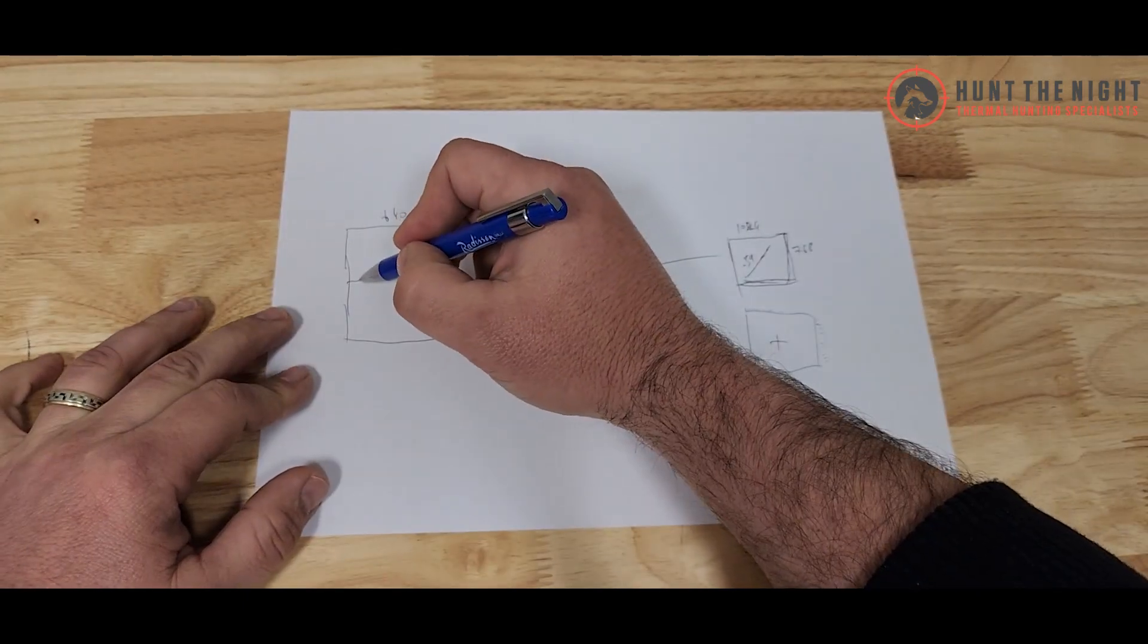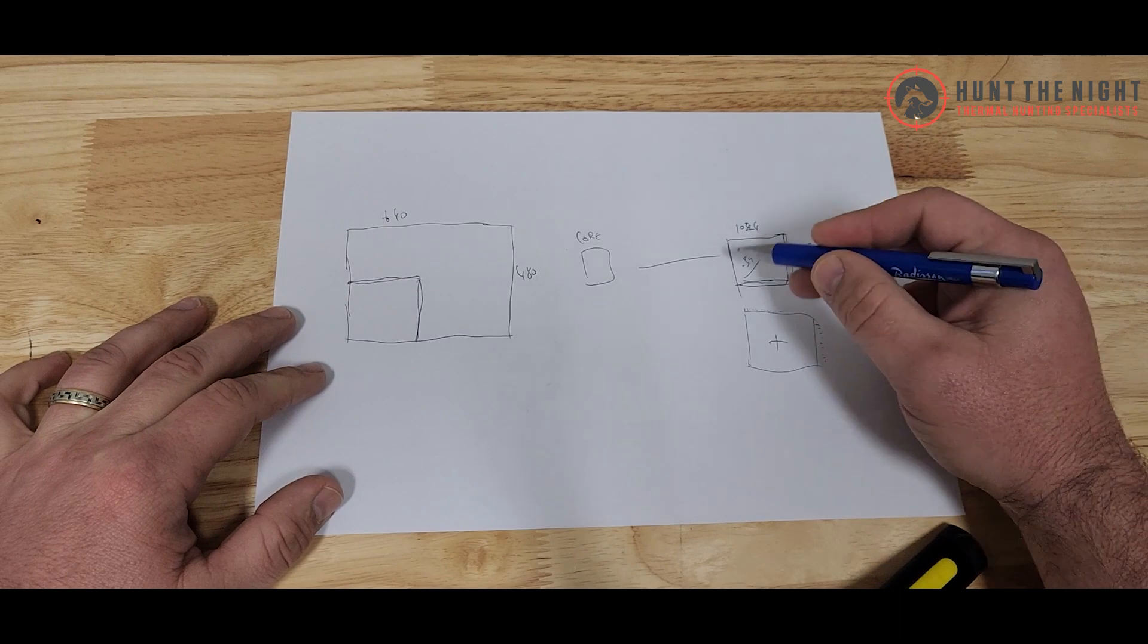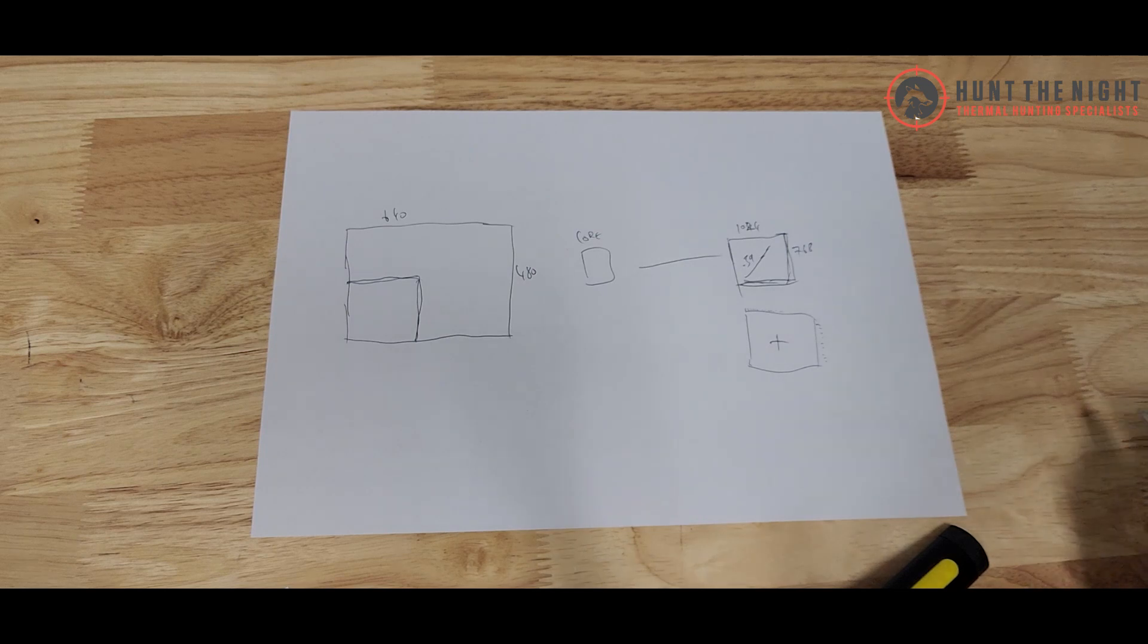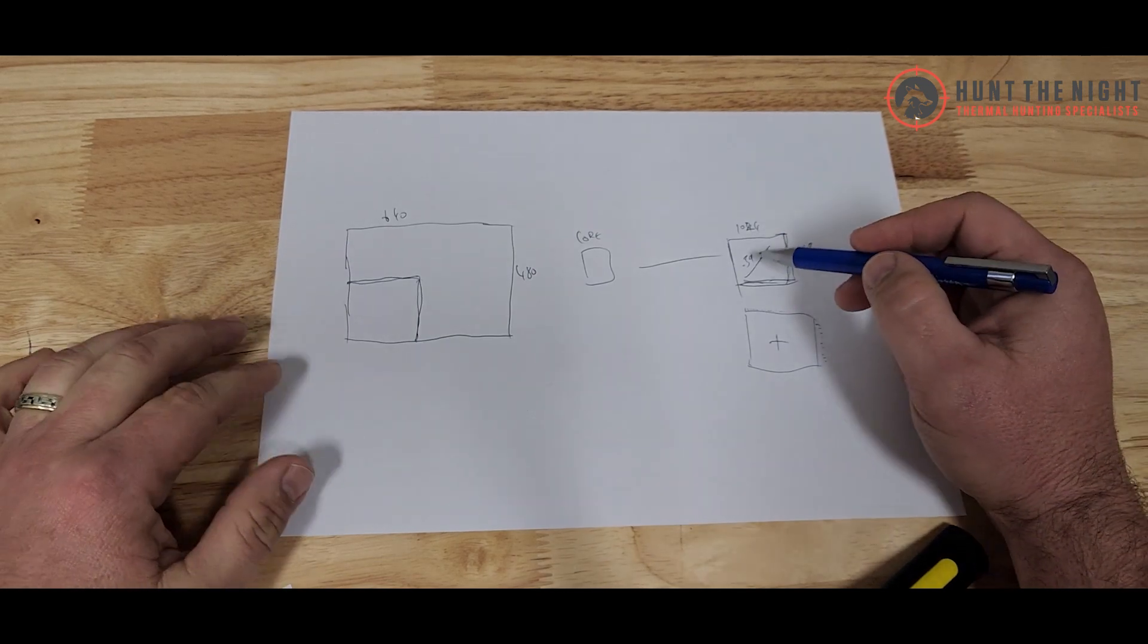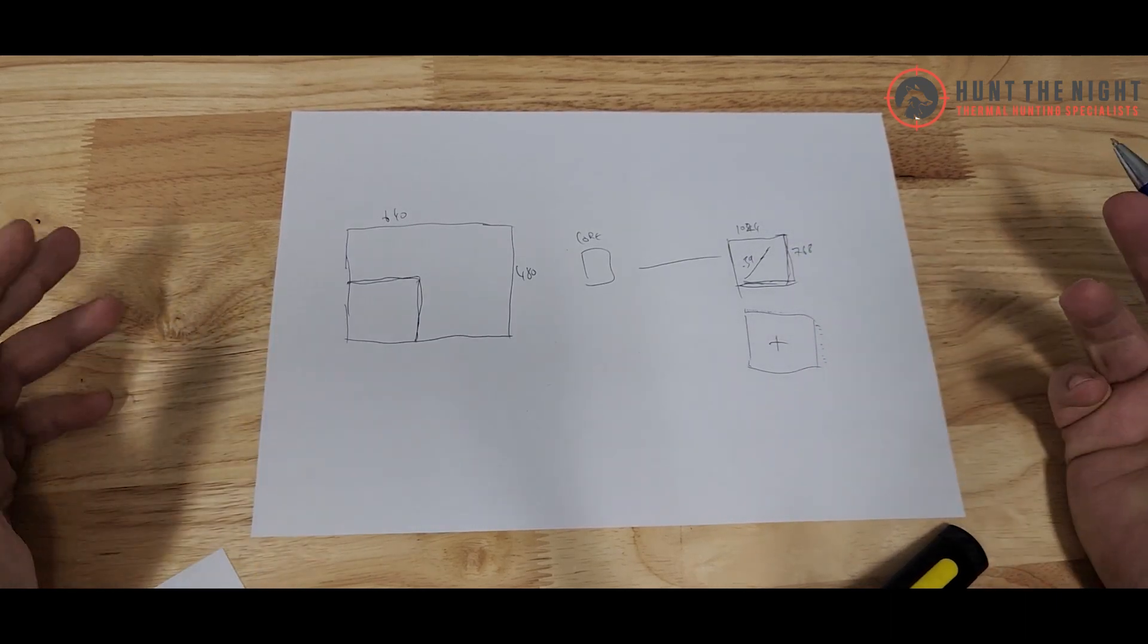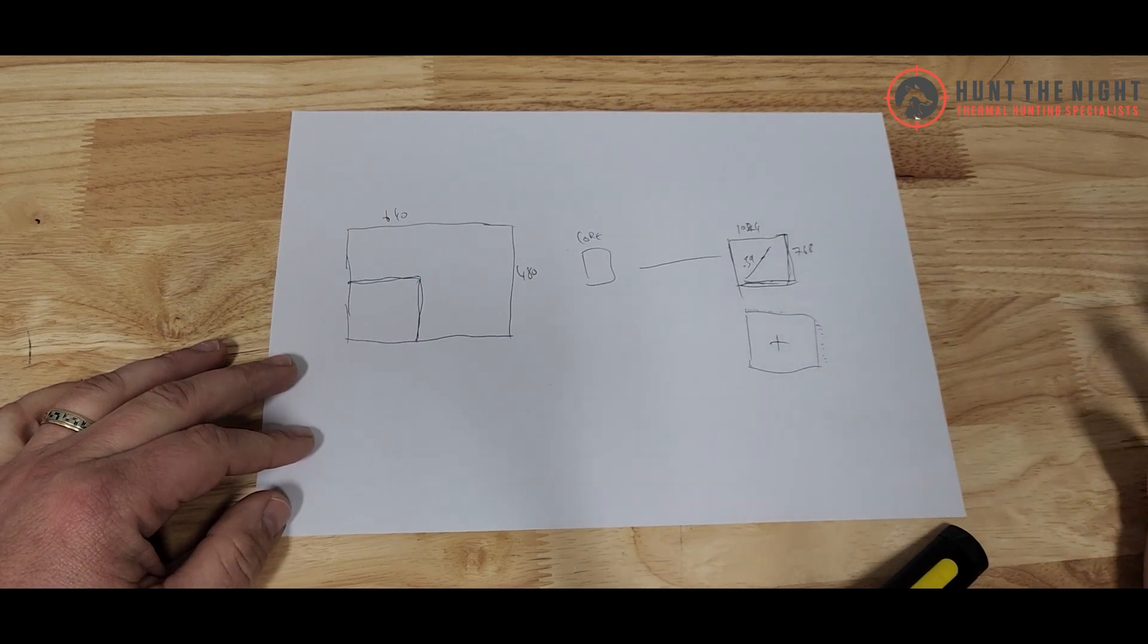Because when we take a 384 sensor and we put it across the same screen, and the XQ50 has got a field of view of 7.5 and it's got 3.5 magnification instead of two magnification, so everything is going to look bigger on this screen. So a fox, for instance, we'll talk about a fox because we see a lot of foxes in Australia. We could call it a pig, whatever, right?